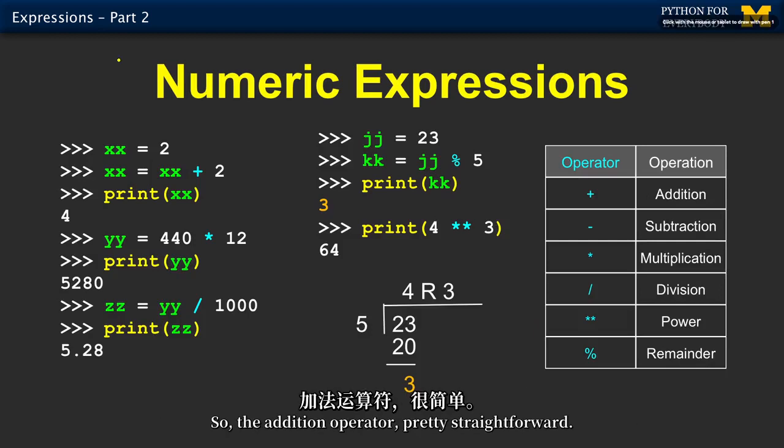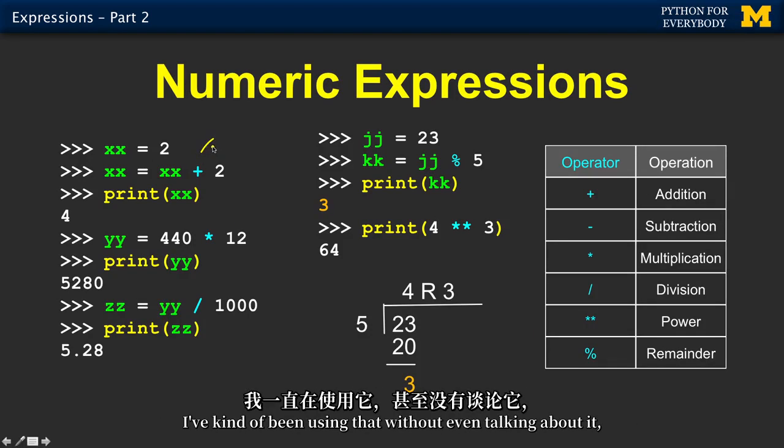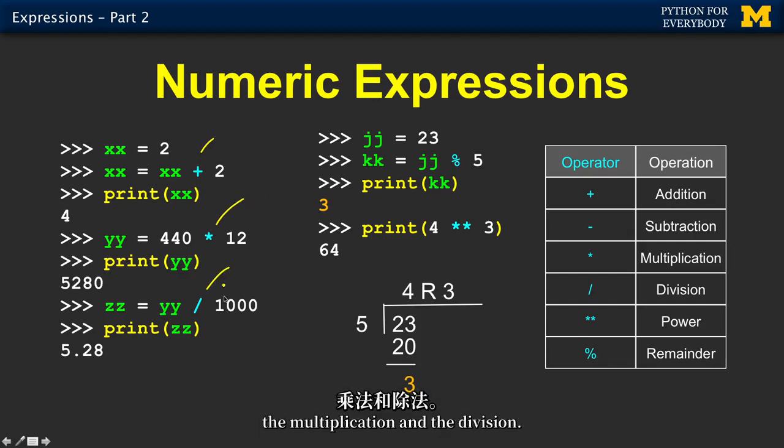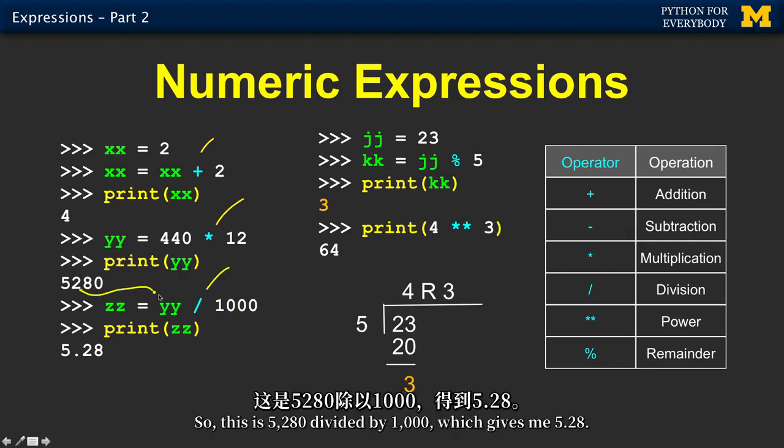So the addition operator, pretty straightforward. I've kind of been using that without even talking about it. The multiplication and division, so this is 5,280 divided by 1,000, which gives me 5.28.